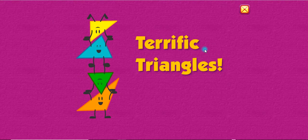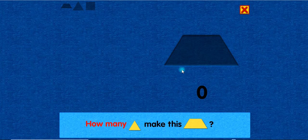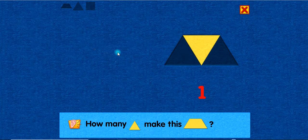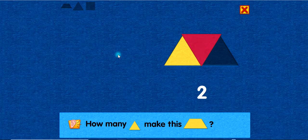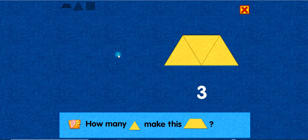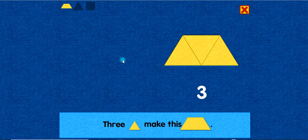Terrific triangles! How many triangles make this trapezoid? One! Two! Good job! You placed this triangle next to the center triangle. Three! Good job! You placed this triangle next to the center triangle. Three triangles make this trapezoid.